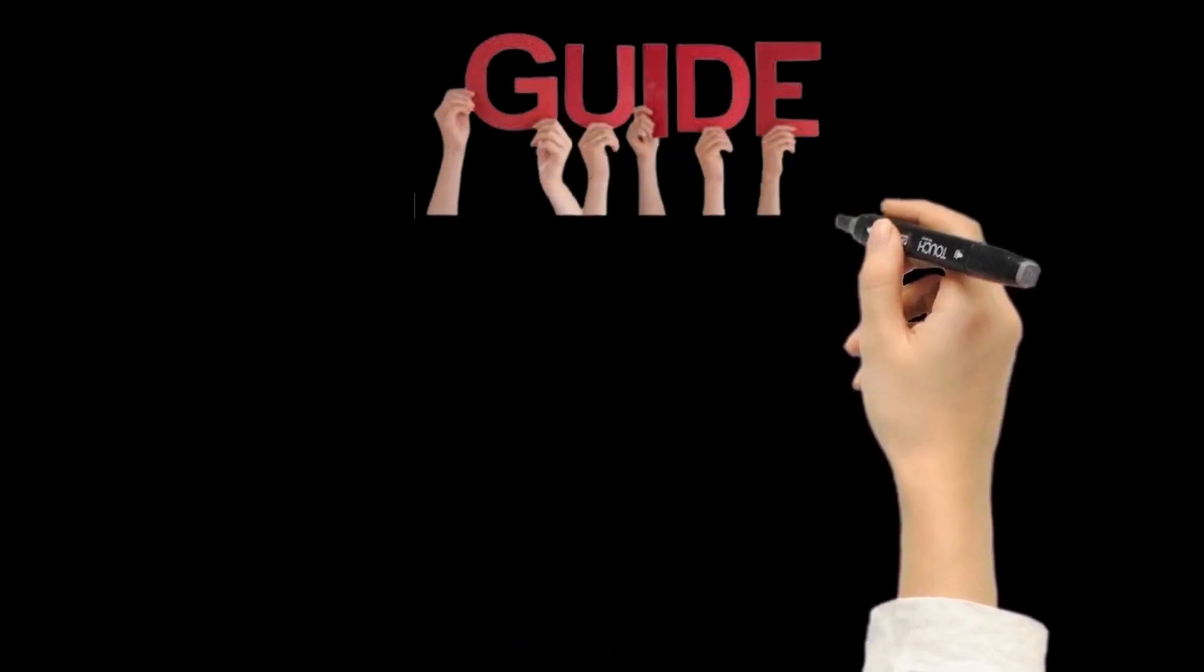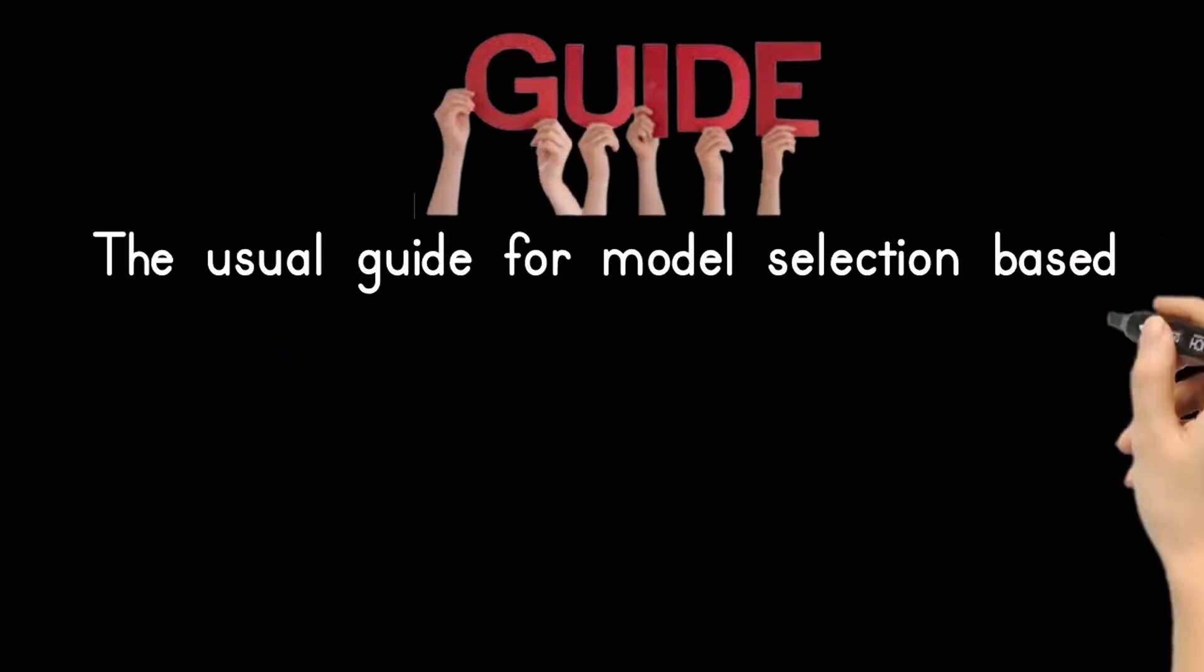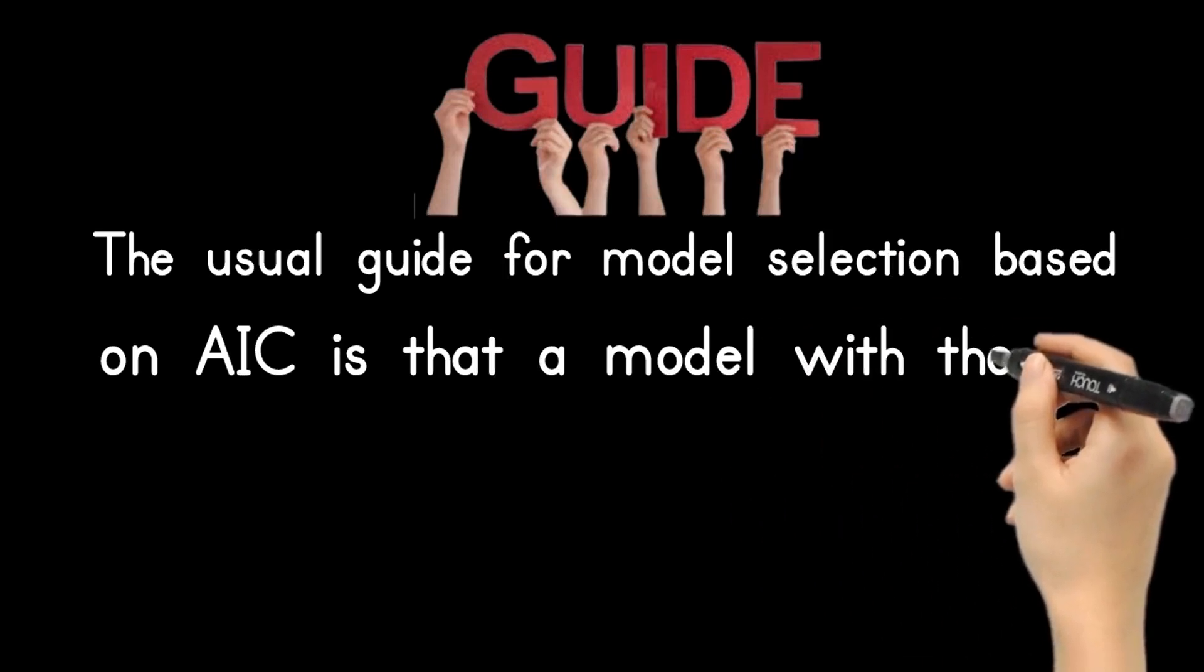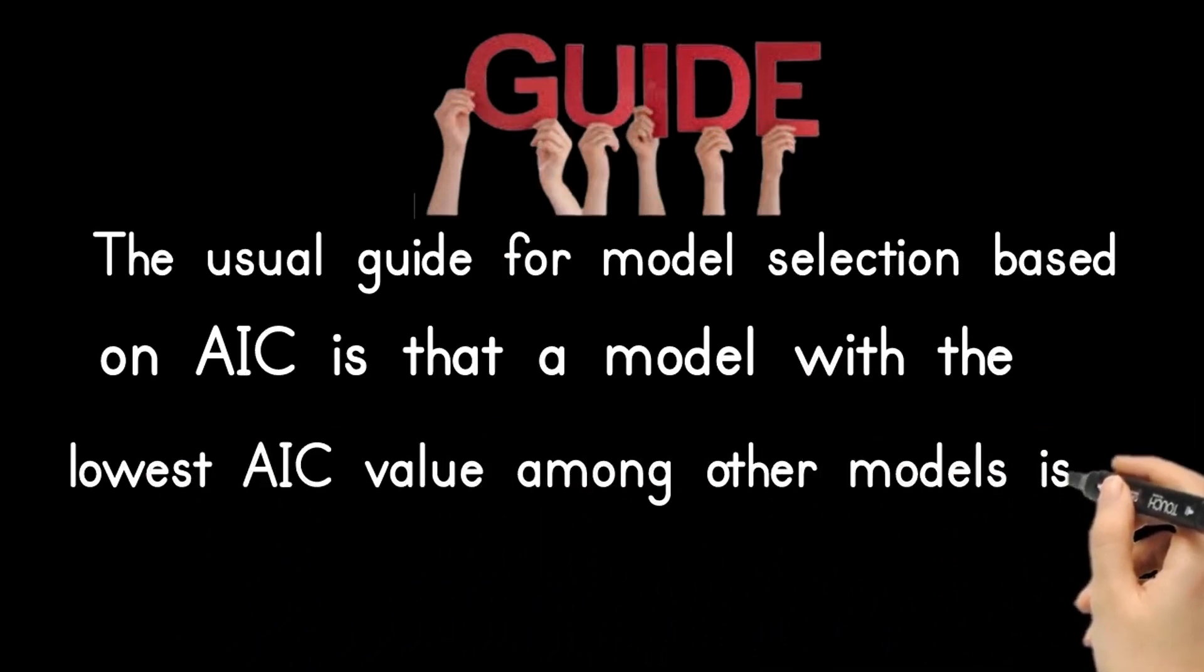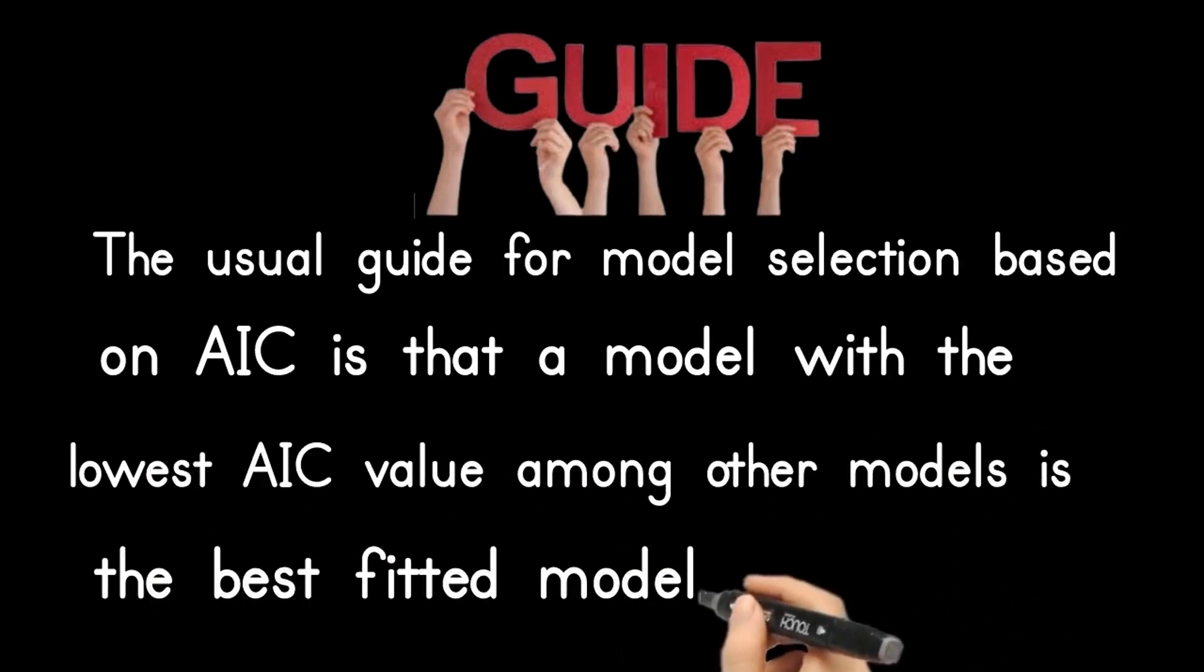The usual guide for model selection based on AIC is that a model with the lowest AIC value among other models is the best fitted model.